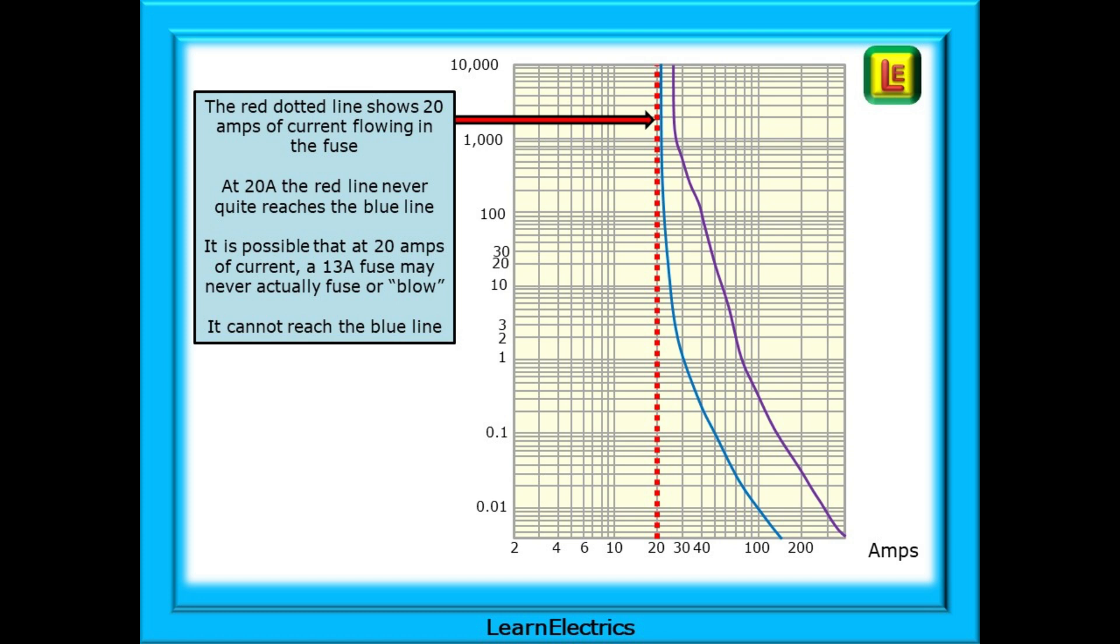It's possible then that at 20 amps of current a 13 amp fuse may never actually fuse or blow. It cannot reach the blue line. The fuse will continue to act as a heater outputting heat that cannot be easily or safely dissipated. The heat builds up and gradually destroys the plug or socket to which it is attached. Wires can begin to melt and it's possible in extreme circumstances that any flammable materials may ignite.